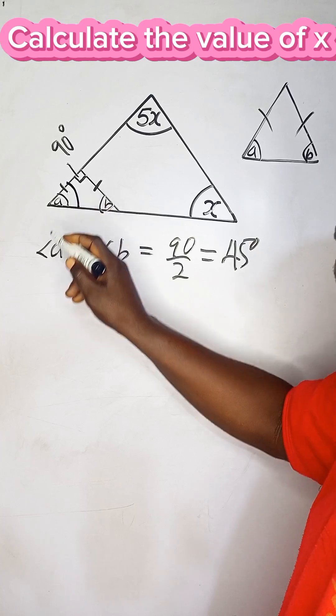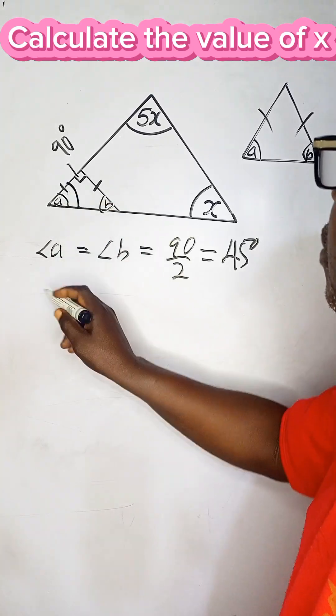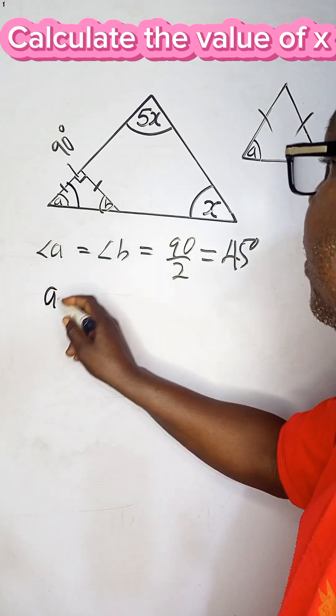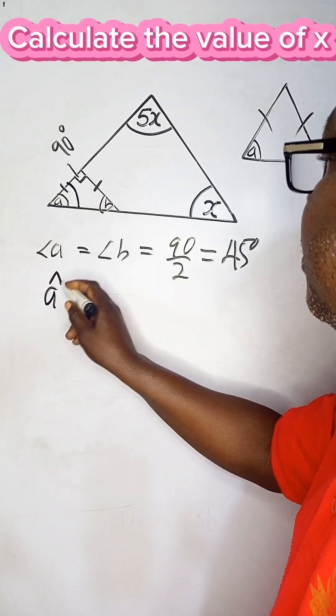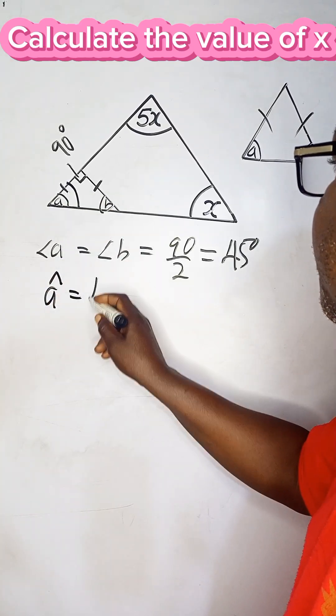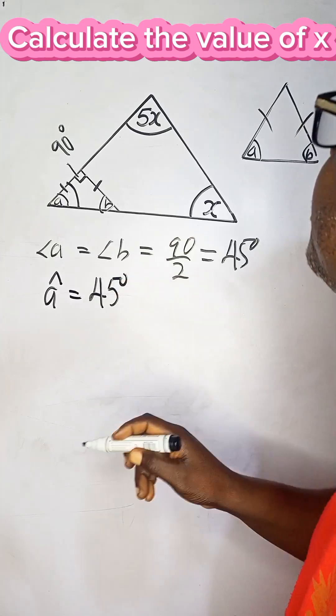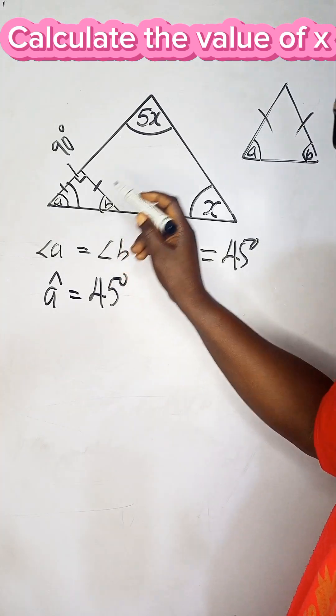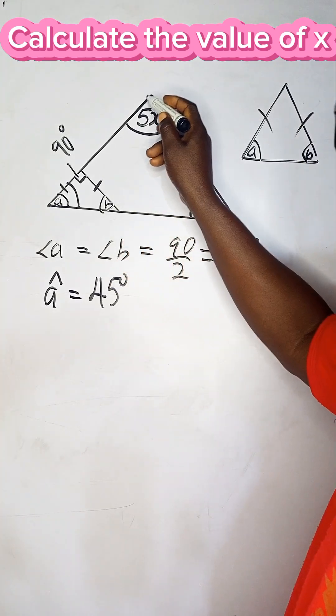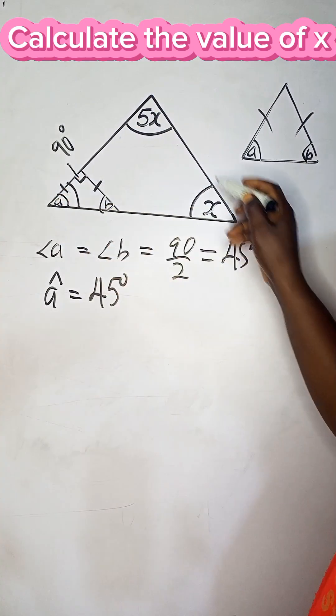So each of these base angles is 45 degrees. We'll be interested in angle a alone, and angle a is 45 degrees. Now let's look at the larger triangle.